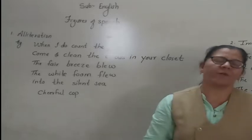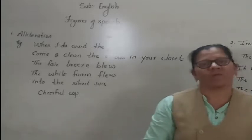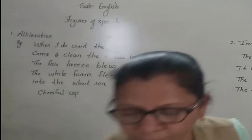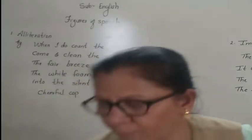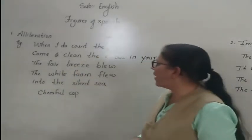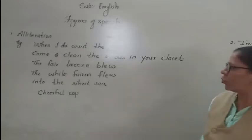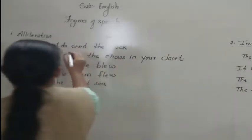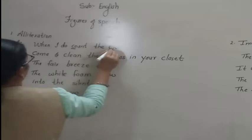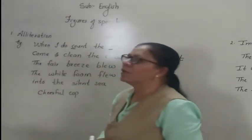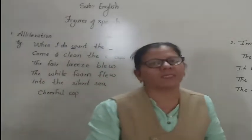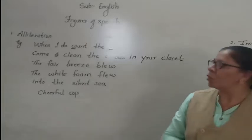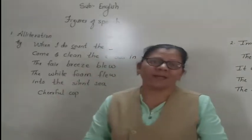So let us have a look at some examples of alliteration. Now see on the board: when I do count the clock. So you can see that here the sound in count and clock, the 'k' sound is repeated. So it is an example of alliteration.